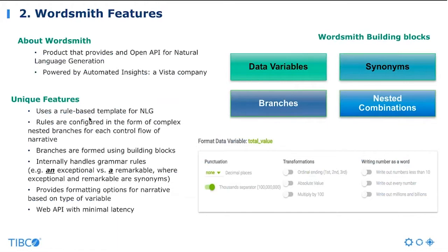Wordsmith is a product that provides an open API for natural language generation, powered by Automated Insights, a partner company with Tibco's Spotfire. It has many unique features, including an easy-to-use rule-based template for natural language generation. Rules are configured in the form of complex nested branches for control flow of the narrative, formed using building blocks. Within Wordsmith, it can handle grammar rules internally, such as AN versus A, and provides formatting options for narrative based on the type of the variable — for example, changing how a number is described. It has a web-based API for minimal latency, and we can use that API to generate narrative within Spotfire.